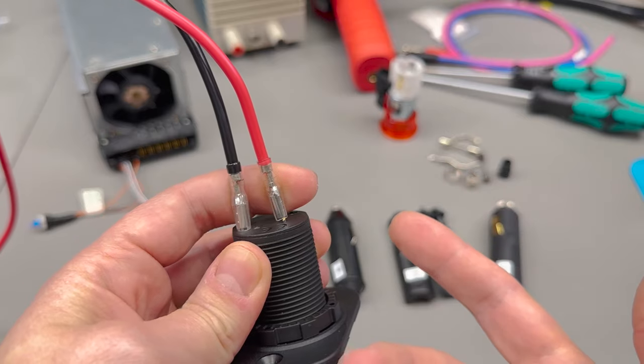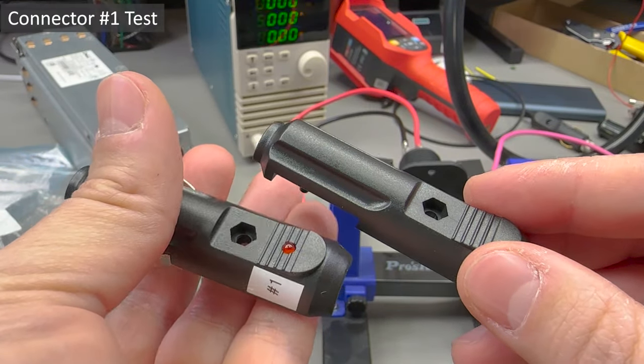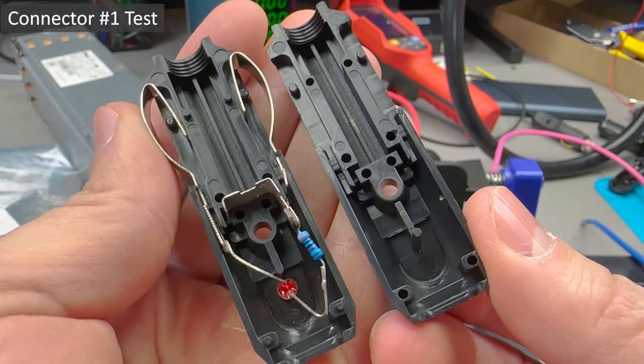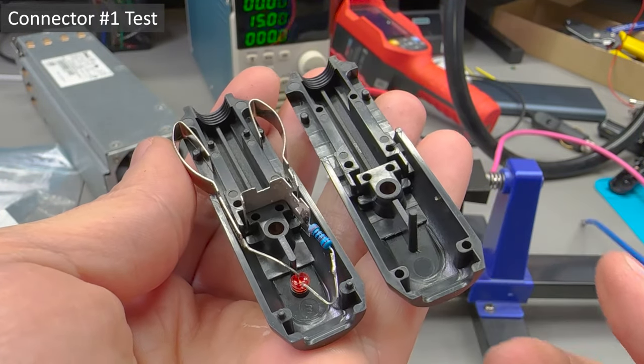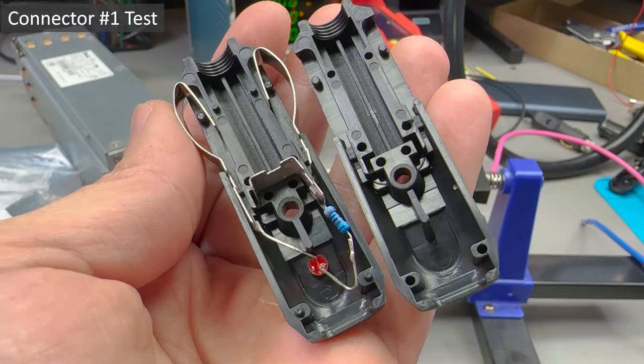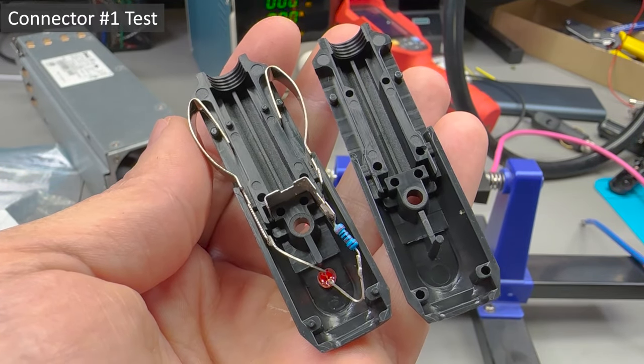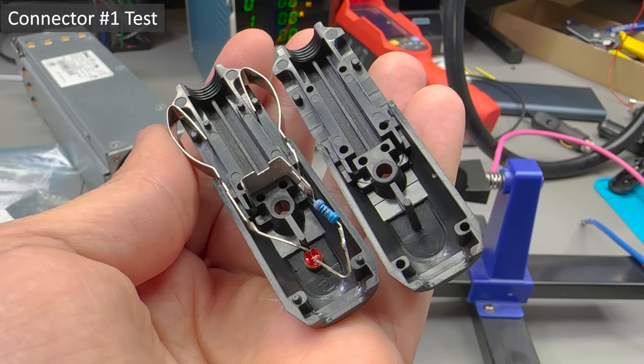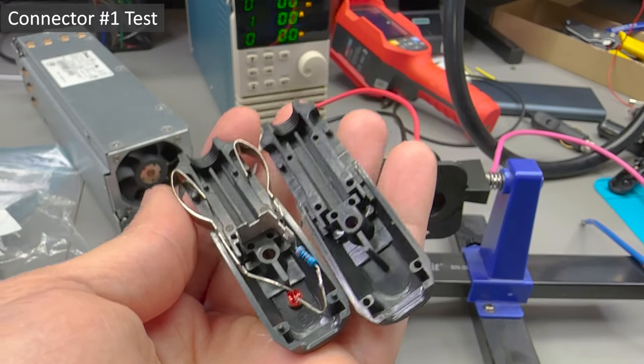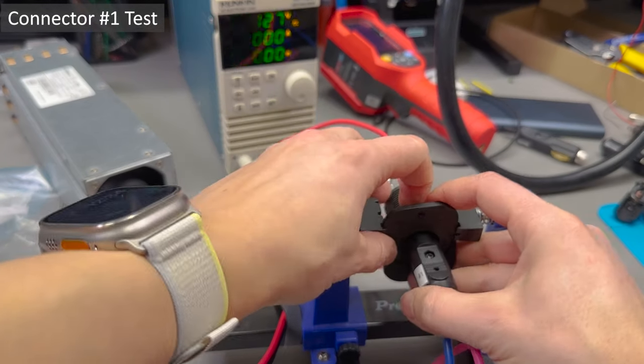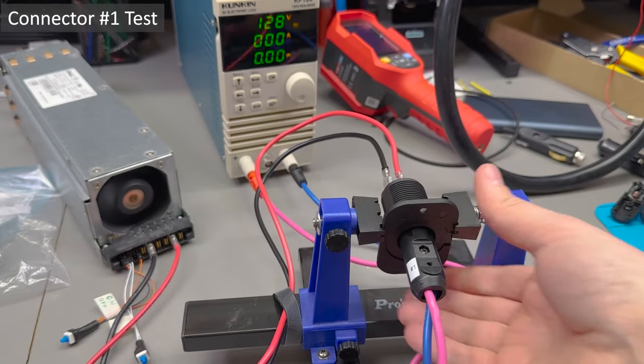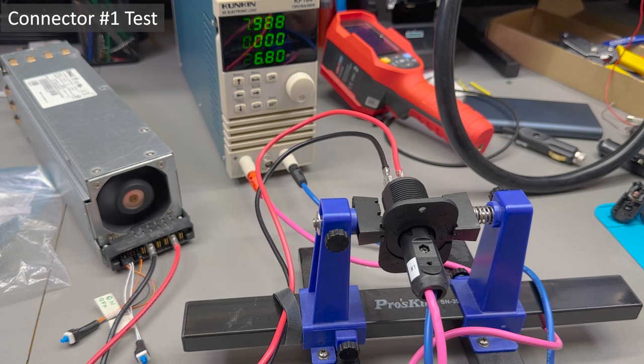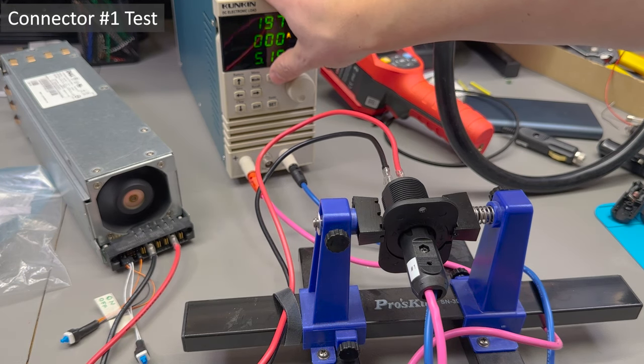Connector number one which was rated for 10 amps is your bog standard cheap AliExpress connector. This comes with a 10 amp fuse so I tested this one at 10 amps. I don't like how this particular connector is constructed. The contacts sit way too close to each other, and when this thing starts to melt these contacts could very well short together. I've started my test and it didn't take too long, probably 10 seconds, before it started smoking with a very bad burnt plastic smell.